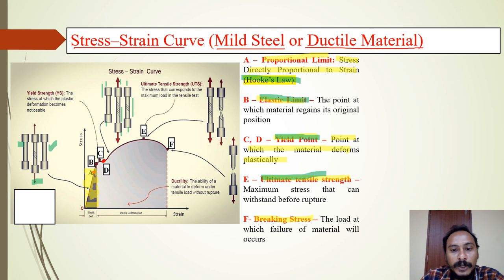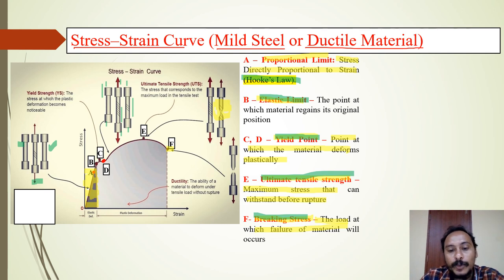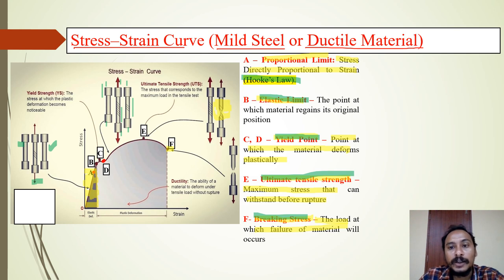The next point is ultimate tensile strength, which is the maximum stress the material can withstand before rupture. At this point we observe necking during the tensile test. Then comes the breaking stress — this is the load at which the material completely fails, and the material comes into two parts after the necking process. This is the stress-strain diagram for typical ductile materials.